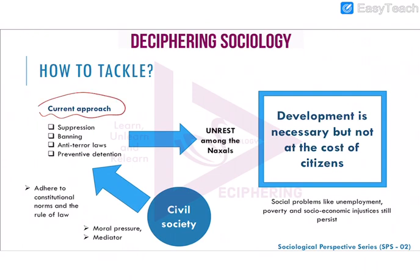The current approach of the government has been to suppress Naxalism forcefully. It has banned Maoist outfits, passed anti-terror laws, and encouraged preventive detention. All these measures have led to further unrest among the Naxalites.